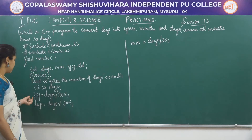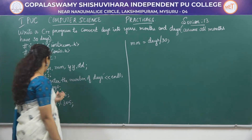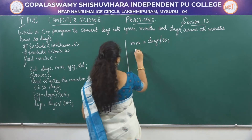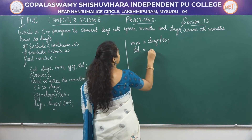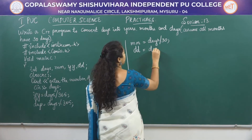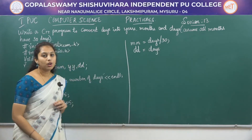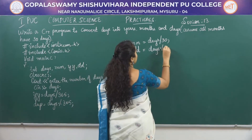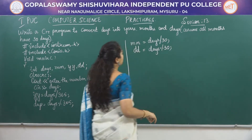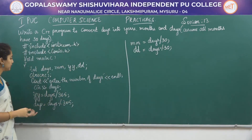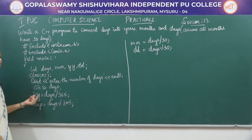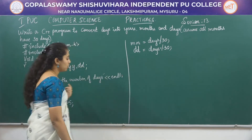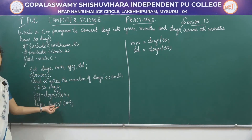Then to convert into months, we divide the days by 30. To get the remaining days after extracting months, we use days modulus 30. So the variables year, month, and days are computed using these formulas.